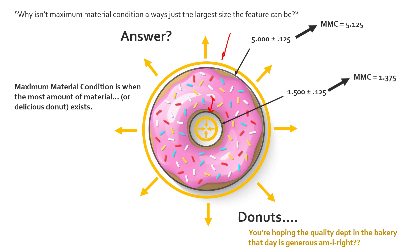So the MMC is the maximum material condition — it's the condition for a size dimension where the most amount of material will exist while still remaining inside the tolerance limits. It's not always the largest size: for external features it's the largest size, and for internal features it's the smallest size.